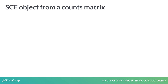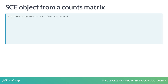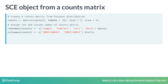The next step is to create a SingleCellExperiment object, and there are two ways to do this. The first way is to use the SingleCellExperiment function. For that, you'll create a small matrix of counts with four genes and two cells, where we simulate counts from a Poisson distribution using the rpois function. Let's use the rownames and colnames functions to name the rows as the gene names and the columns as the cell names.